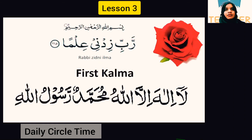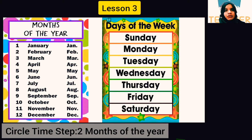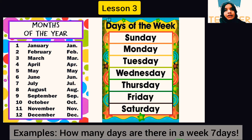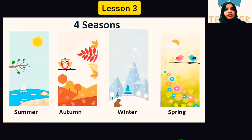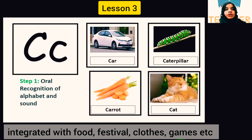This is time for circle time. In circle time, we start with the weather, then move to seasons. After that, we introduce months and days of the week. Ask the children which month is going on — there are 12 months in a year. Then tell them how many days are in a week — there are seven days — and ask which day is today: Sunday, Monday, Tuesday, and so on.